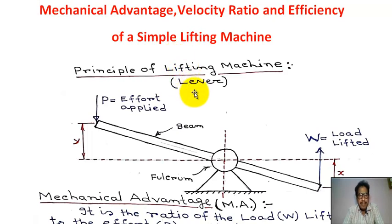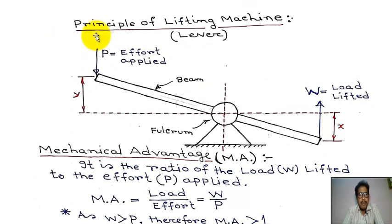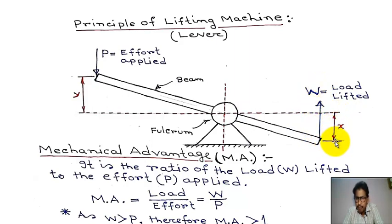In our previous tutorial, we learned the principle of lifting machine. This is a lever, this is the beam, this is the fulcrum. P is the effort applied downward, Y is the distance moved by effort, W is the load lifted upward, and X is the distance moved by load. It is already learned.